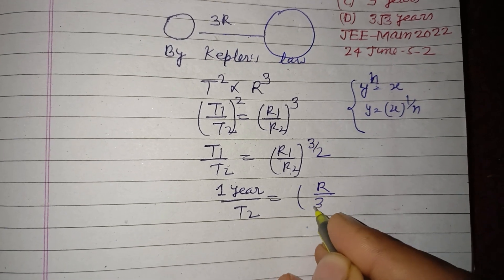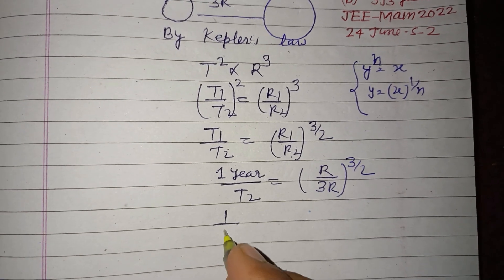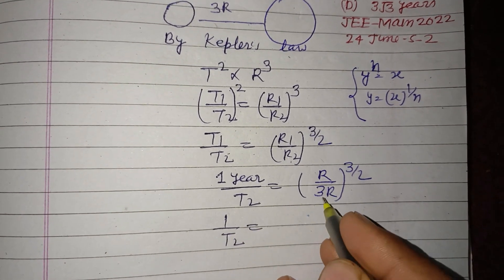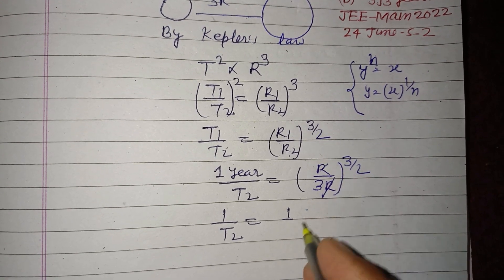...and R2 is 3R here, and this is 3/2. So 1 upon T2 equals R/R cancel, this is 3 to the power 3 and 1 by 2.